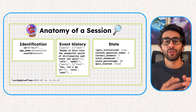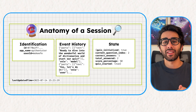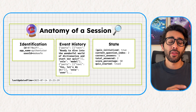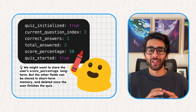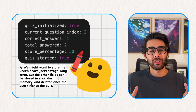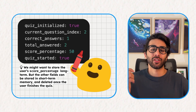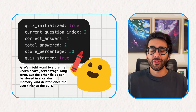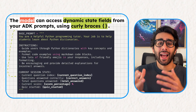You can think of an ADK session as one complete continuous phone call between the user and our agent. Every time a user starts a new chat, a new session is created with a unique ID, and the session acts as a container. If we look at its anatomy, we can see it holds the session's identification information and the entire back-and-forth conversational history. Most importantly for our purpose is the state — the state is like the agent's scratch pad for the current conversation.